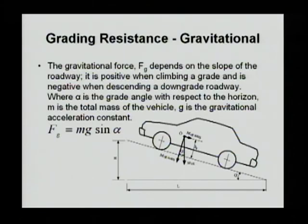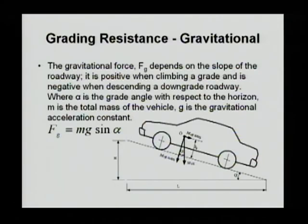Gravitational resistance is the resistance the vehicle itself experiences when on a slope — part of the vehicle weight becomes a resistance. On a downslope, part of the weight actually becomes traction. The gradient resistance is mg times sine alpha, where alpha is the degree of slope. Note that gradability is defined as a percentage — for every 100 meters of horizontal distance, how much height you gain — expressed as tangent alpha. But for calculating gravitational resistance, use mg times sine alpha.